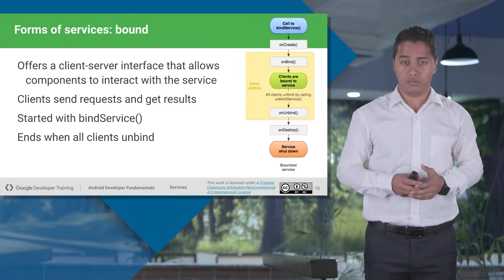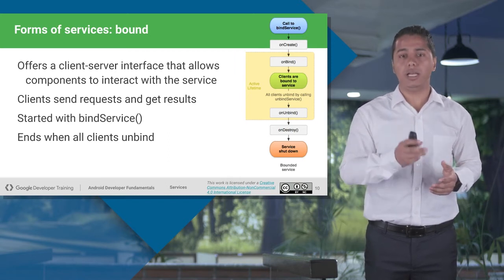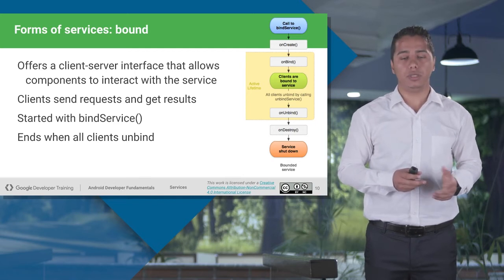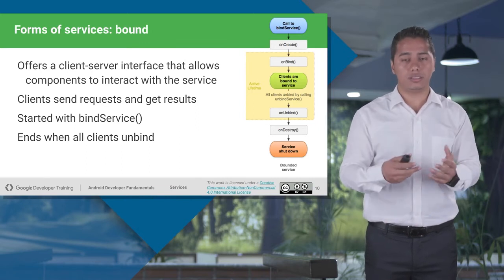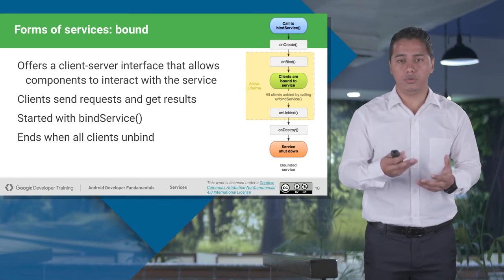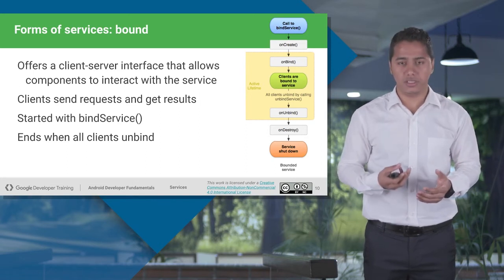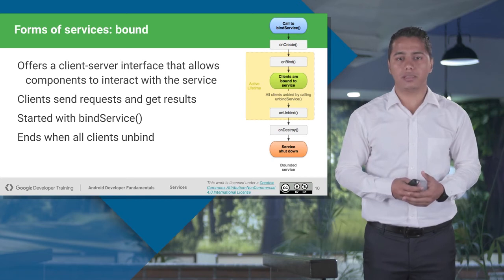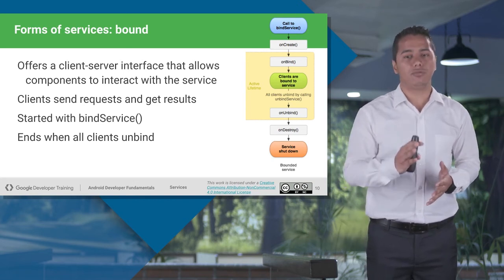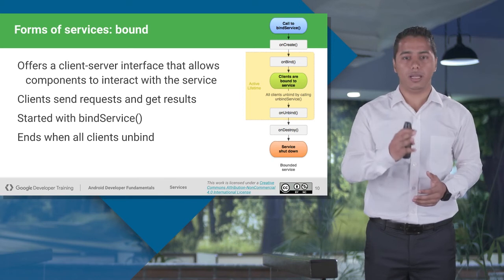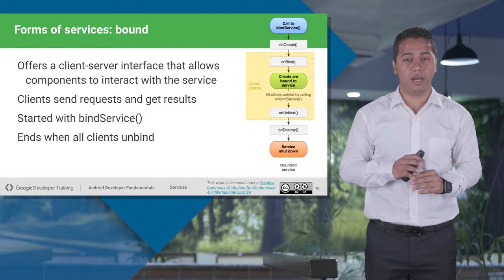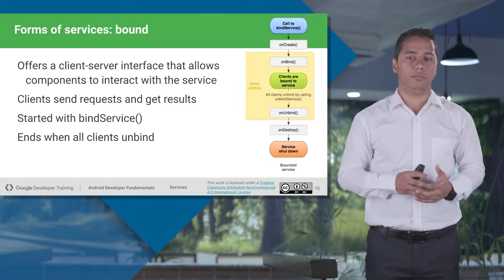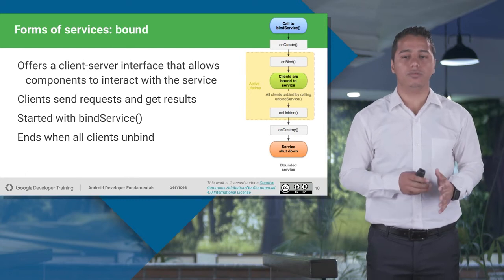The lifecycle of a bound service starts from onCreate. But this time, instead of onStartCommand, it binds the components and clients using a method named onBind. Once it binds to the component, this is where you put the functionality — fetching or getting the request and returning the result back. Anybody who wants to unbind calls the onUnbind method. After that, once every client is unbound, onDestroy is called and your service lifecycle gets destroyed.